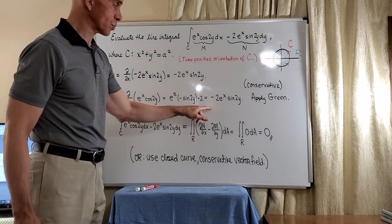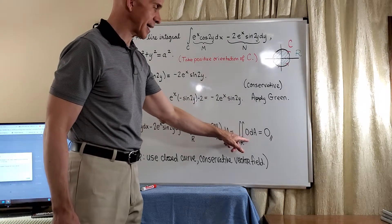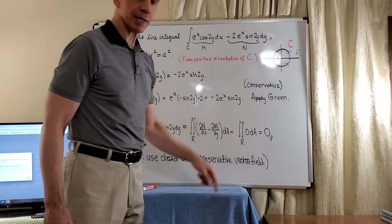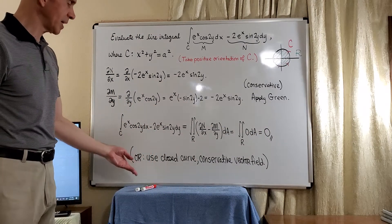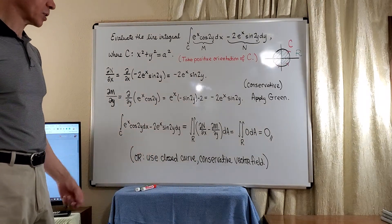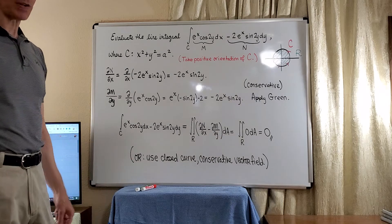But these two partials are equal, so the integrand is identically zero and the double integral is zero. So as I've noted here, or you could use the closed curve with the conservative vector field.